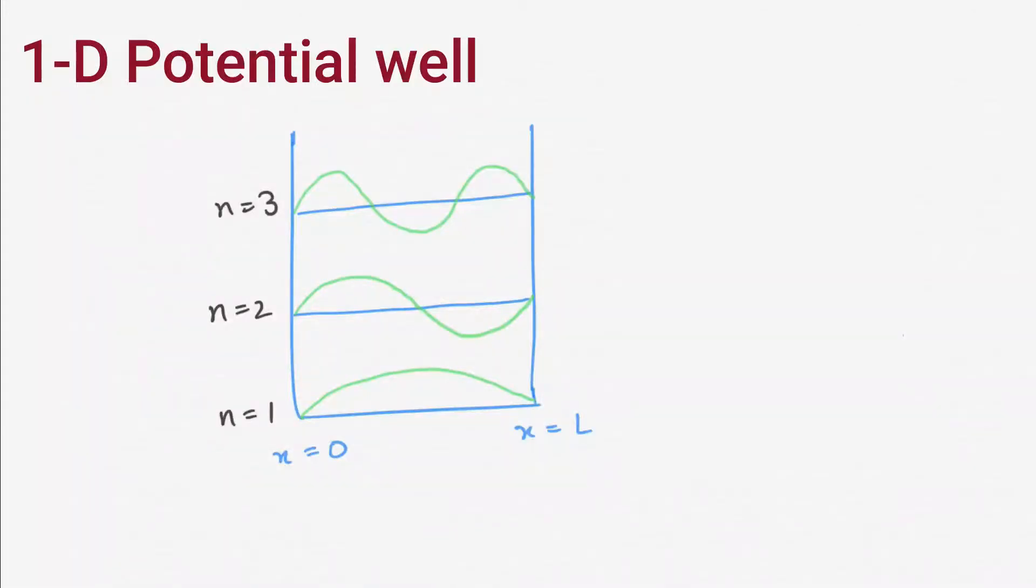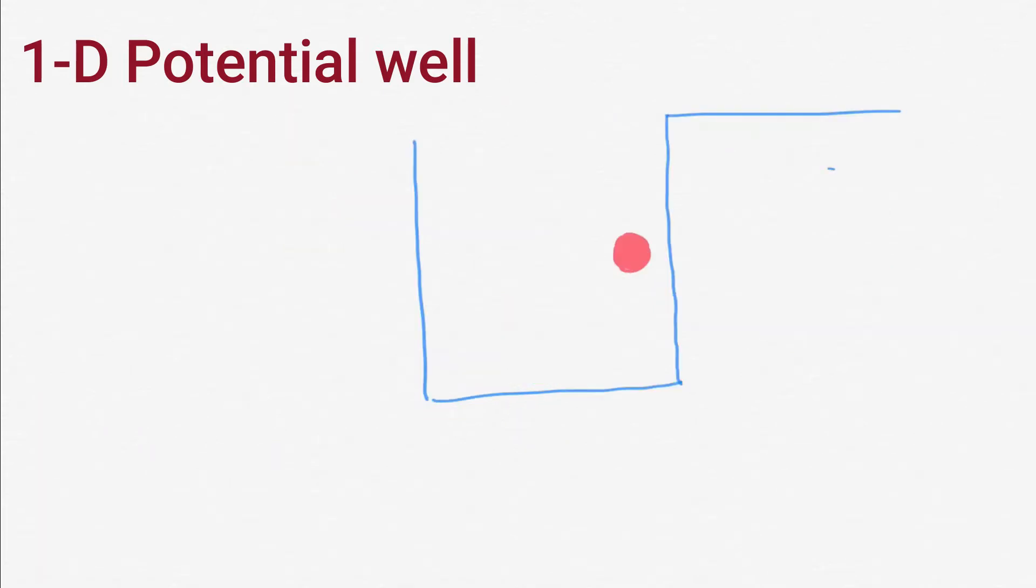Like we have discussed in our previous video on Schrödinger equation, the wave function outside a 1D box is zero. That is the case when we have infinite potential at the boundary. But what if we have finite potential at the boundary?